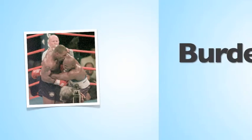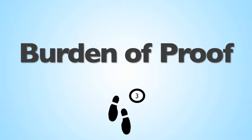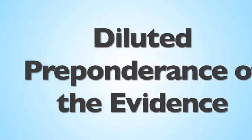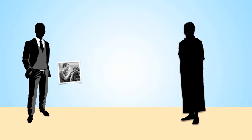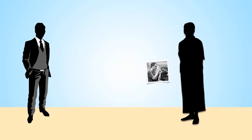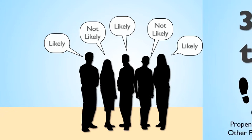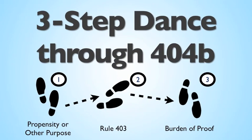And Step 3: The Burden of Proof. Finally, be mindful of the Huddleston test, or the diluted preponderance of the evidence test. For evidence of other acts to be relevant, the proponent of that evidence must offer some evidence tending to show that the other act occurred and that the person committed it. Basically, there must be enough evidence for a jury to reasonably find that it is more likely than not that the other act occurred and that the defendant committed it. This three-step dance is very helpful to pursue in analyzing a variety of Rule 404(b) problems.